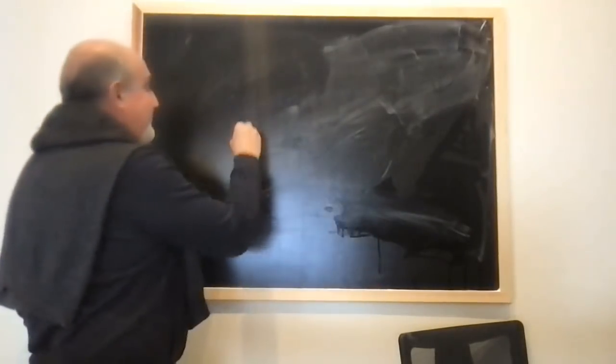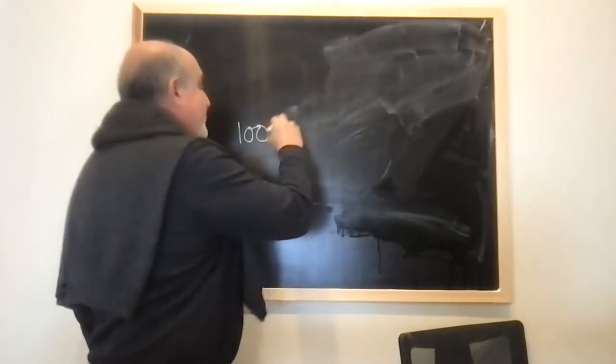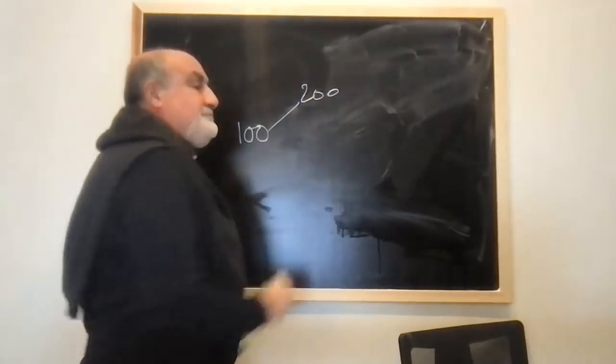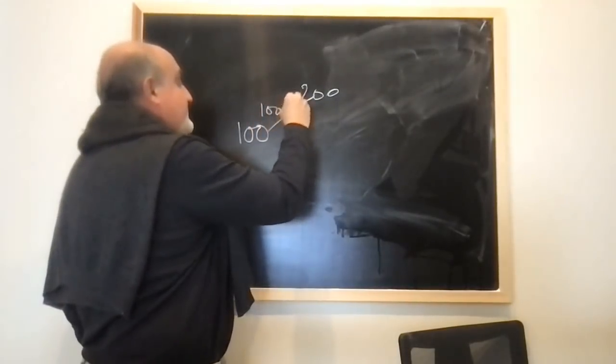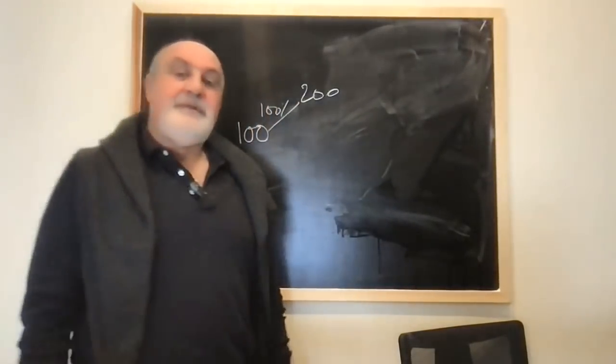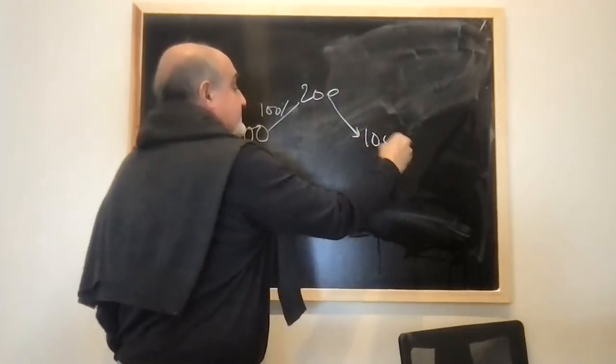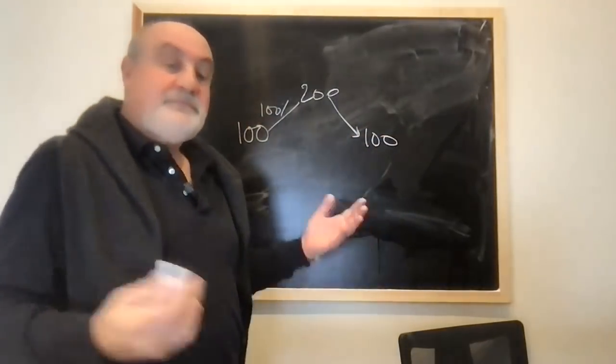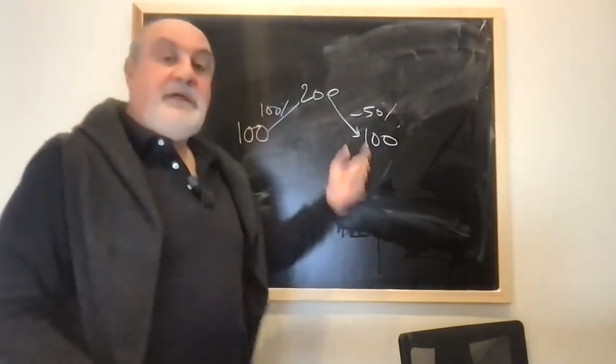Why? Let's say a stock trades at 100, it goes to 200. Great, returns 100%. And then goes back down to 100. That went down only 50 percent. You see, they're not additive.